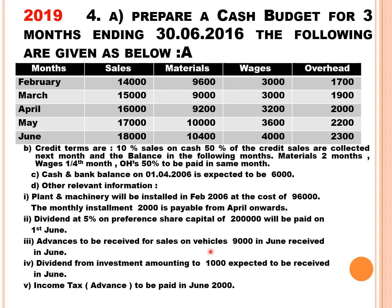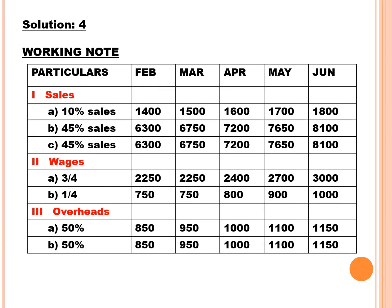An advance of Rs. 9,000 is to be received in June for the sale of a vehicle — this is treated as a receipt. Dividend from investment of Rs. 1,000 is expected to be received in June — also treated as a receipt. So we have two receipts: advance on sale of vehicle and dividend on investment. Income tax advance is to be paid in June 2016, treated as a payment.